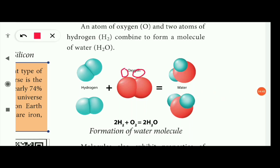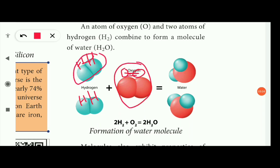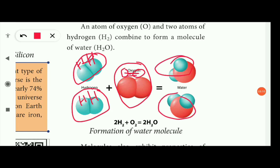Oxygen O2 is stable. Hydrogen is single, and we have 2 hydrogen atoms. So 2 hydrogen atoms and 1 oxygen atom combine: 2 hydrogen atoms join with 1 oxygen atom to form water molecules. We need to balance this chemical equation — this is the formation of the water molecule.